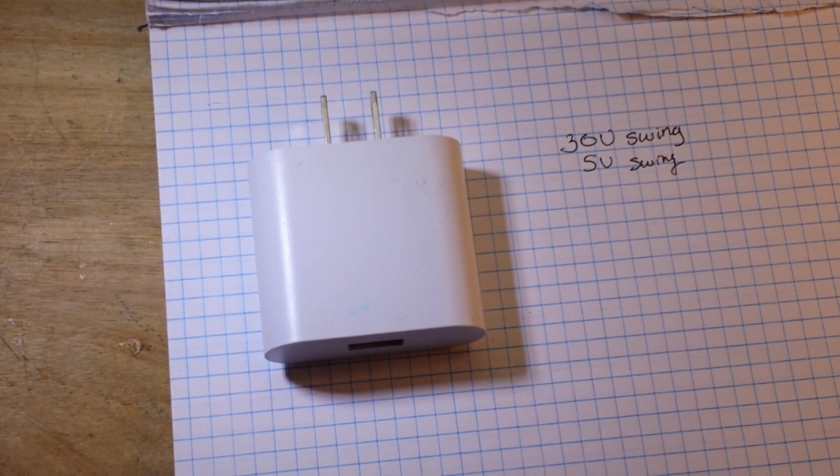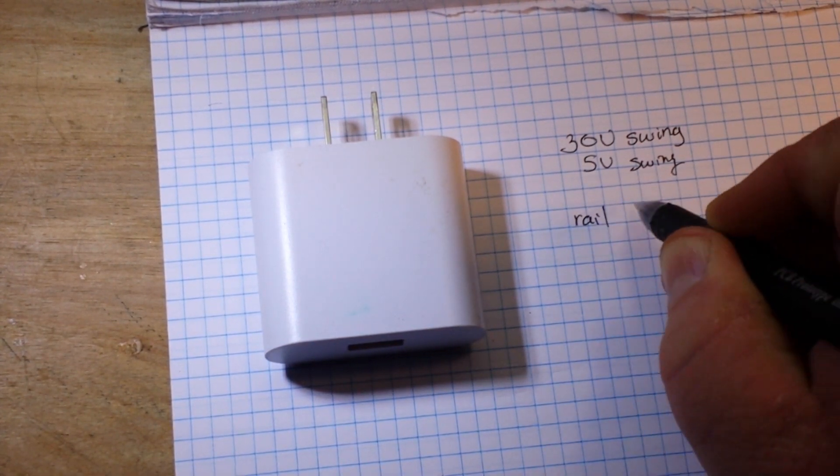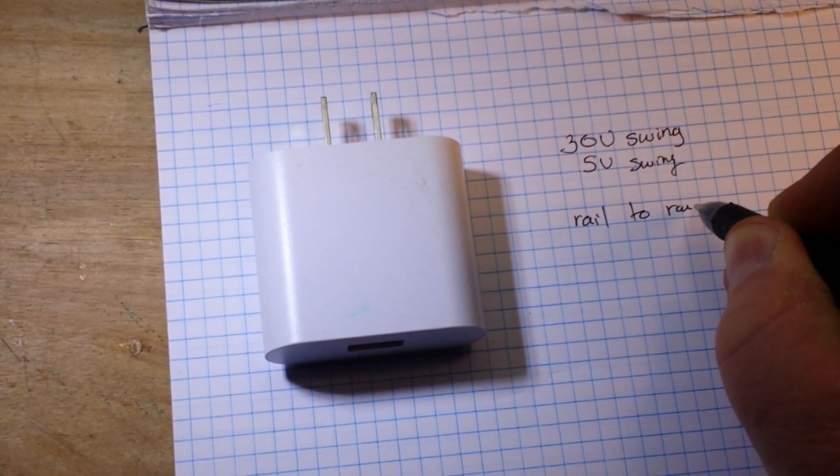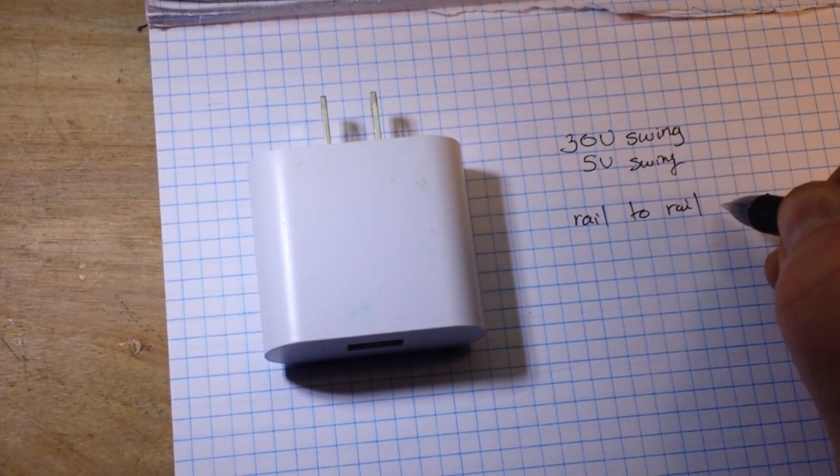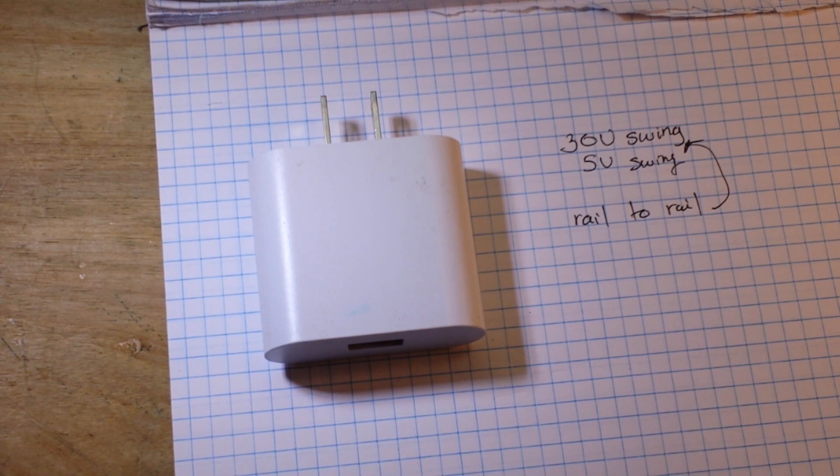Okay what we're talking about is our rail to rail, that's our swing that we're talking about here. Now our standard op amps again like the 741 and everything of that ilk are not what are known as rail to rail op amps, they have the headroom that we talked about.